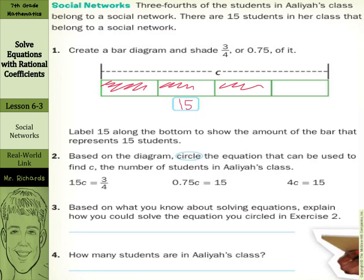Would 15 times C equal three-fourths? No. Would four times C equal 15? No. It looks more like seventy-five-hundredths times C is going to equal 15. Based on what you know about solving equations, explain how you can solve the equation you circled. This is multiplication here, so what I would do is divide each side by seventy-five-hundredths.